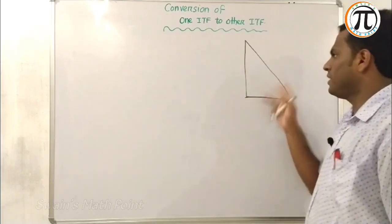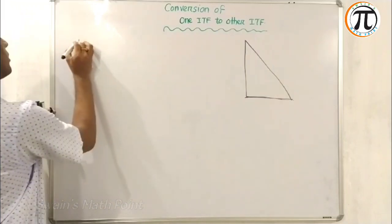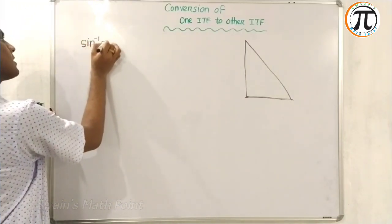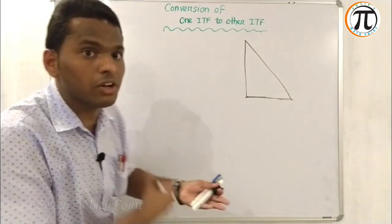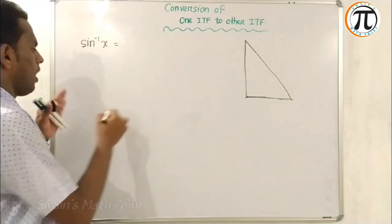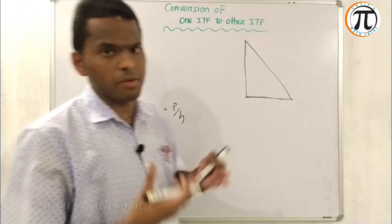I will try to convert a pair of functions. Suppose I'm taking the function sine inverse X. How to convert it to other items? That means cosine, tangent, cotangent, secant, cosecant. Sine theta formula can be written as sine theta equals P by H, and cosine theta equals B by H.